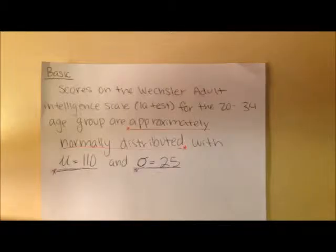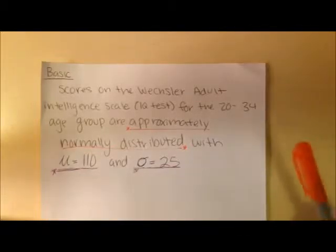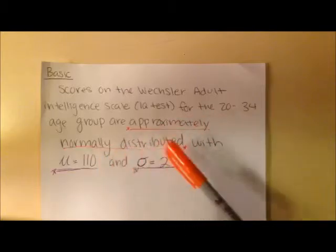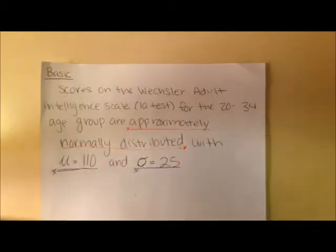The first step in solving any word problem is picking out what is most important. The first thing that I noticed is that the scores in this example are approximately normally distributed, which means that you're going to get a graph that looks like your standard bell curve, very symmetric, one mound, very even.